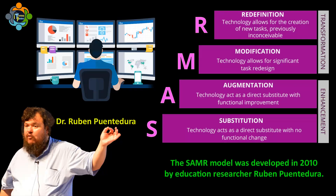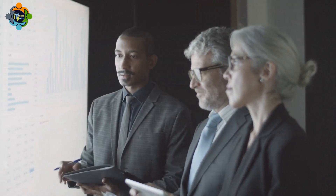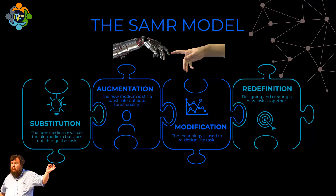The SAMR model was developed in 2010 by an independent education researcher Ruben Puentedura. It's a conceptual tool designed to help educators think about the role of technology in supporting learning. SAMR stands for four tiers of online learning.